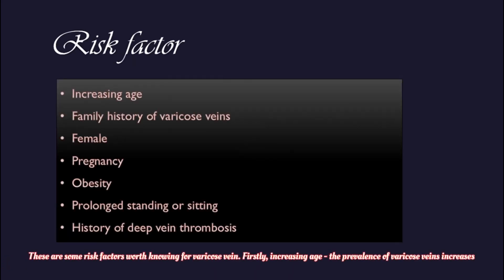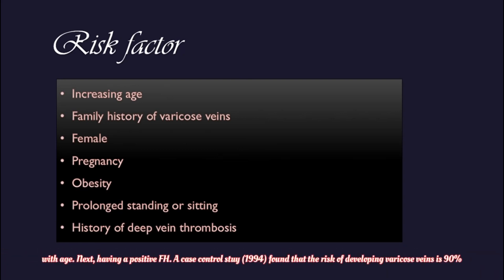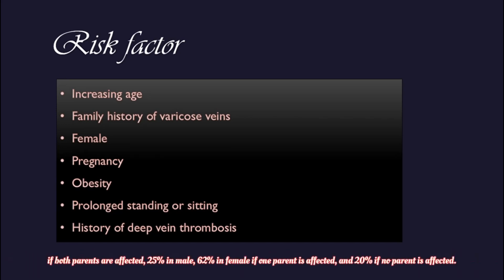These are some risk factors worth knowing for varicose veins. Firstly, increasing age — the prevalence of varicose veins increases with age. Next, having a positive family history: a case-control study done in 1994 found that the risk of developing varicose veins is 90% if both parents are affected, 25% in males and 62% in females if one parent is affected, and 20% if no parent is affected.